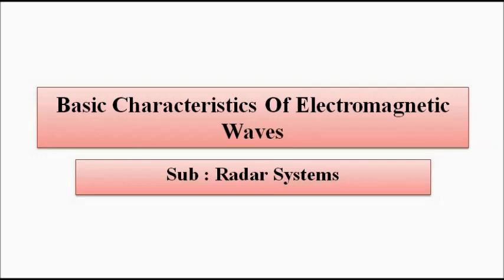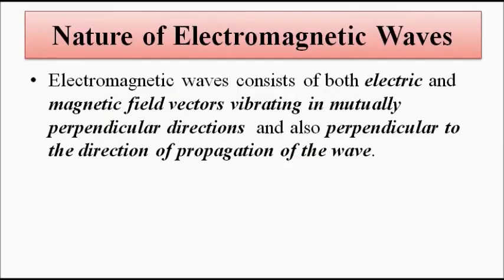Still, we will go in a systematic way — that's why I am putting this video out — where we will have a very basic discussion about electromagnetic waves. So first of all, what are electromagnetic waves? From the name itself you can make out that electromagnetic waves consist of both electric and magnetic fields, represented by vectors. Both electric and magnetic field vectors are present; that is, both magnitude and direction are associated with electric and magnetic fields — that's why the term vectors comes into play.